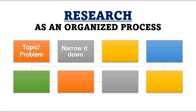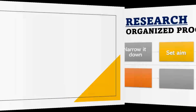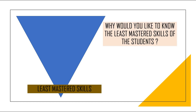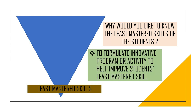The next part of the process is to set your aim — simply referring to setting your goal or target. What do you want to achieve? What result do you expect? What solution could you contribute in solving the existing phenomenon? You must set your hypothesis, a proposed explanation using the limited evidence you have as a starting point. For example, my target is to formulate an innovative program or activity to help improve students' least mastered skills.